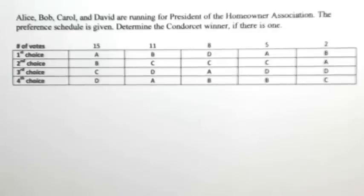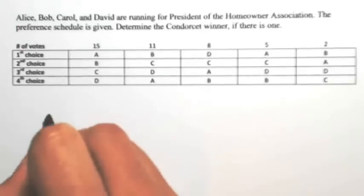So in determining the Condorcet winner, what we're going to do is pit two candidates against themselves and see which one is more preferred. For example, let's just go in alphabetical order. We'll start that way. So let's do A versus B.